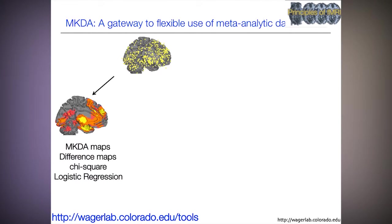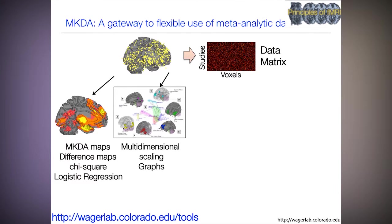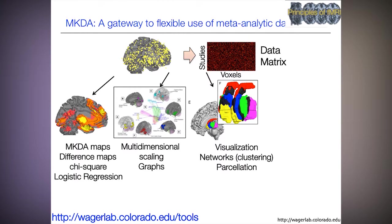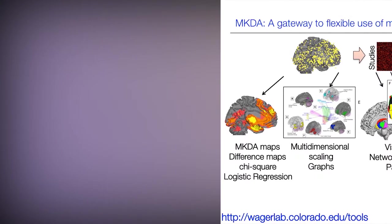MKDA is also a gateway to flexible use of meta-analytic data across many applications. We can do MKDA maps for one condition, make difference maps comparing different conditions, and do chi-squared or logistic regression analyses giving complementary pictures of differences among maps. This gives us a matrix of studies by voxels that we can do many things with — multidimensional scaling, graph theoretic analyses, clustering regions into networks and parcellating brain regions, and examining associations between brain activity incidence and task type for decoding across a wide variety of psychological and clinical processes. This is really useful for reverse inference in a formal setting.